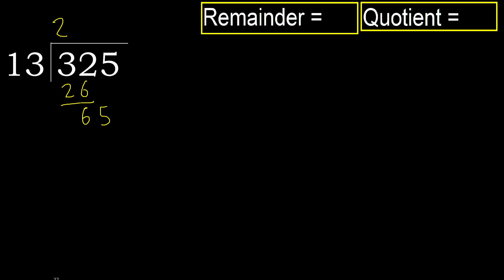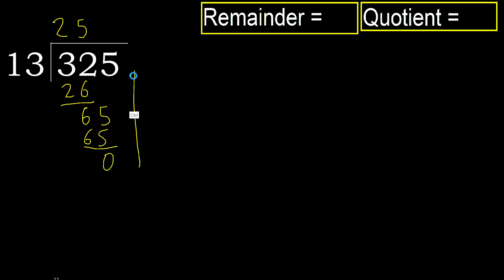13 multiplied by 6 is greater. Multiplied by 5, 65 is not greater. Subtract. Next: there is no number, therefore finish it.